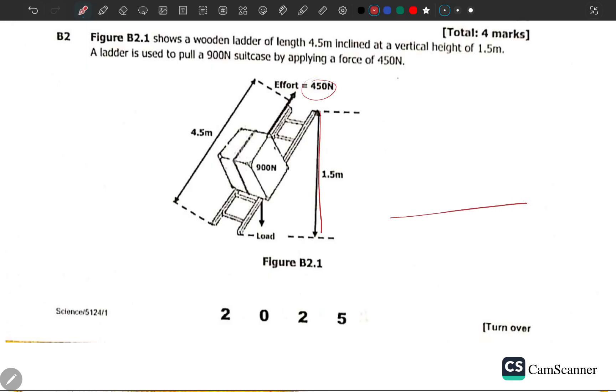In short, we have a situation like this. If you cannot see properly, this is what we are having. We have a box here which is weighing 900 newtons, and the force, the effort is 450 newtons. The length of the incline is 4.5 meters and the height of the incline is 1.5 meters. That's what we have here as information.